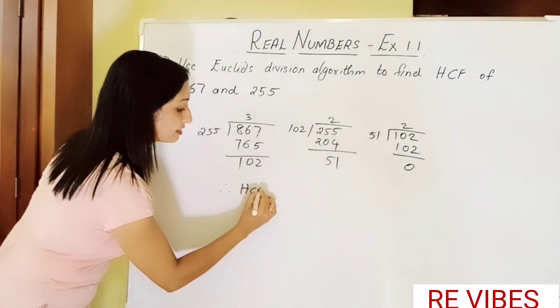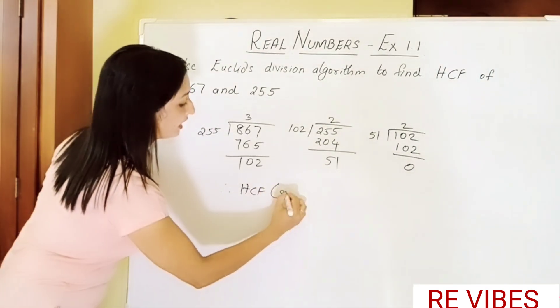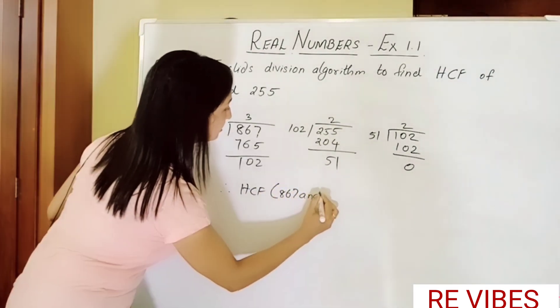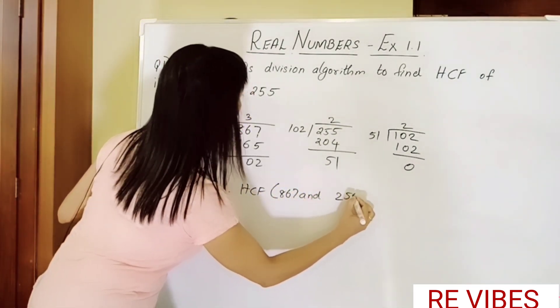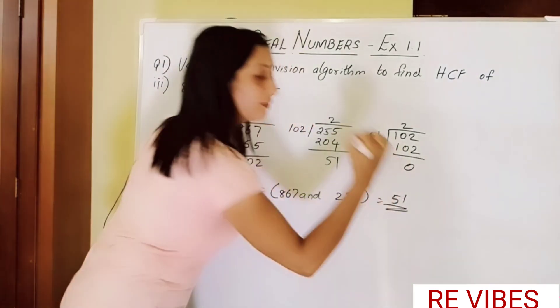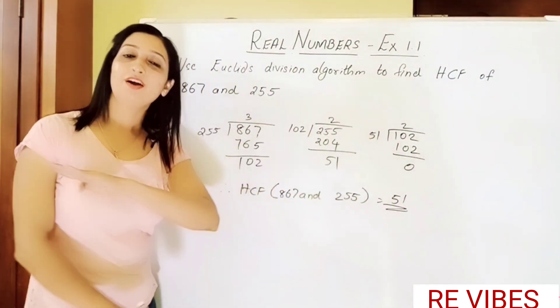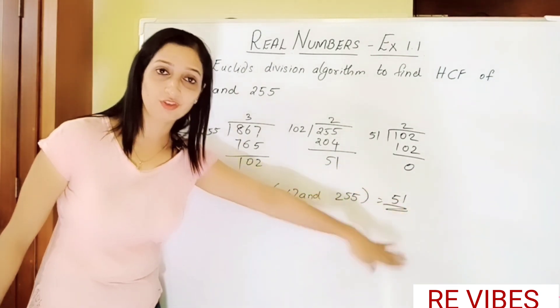Therefore, HCF of 867 and 255 is 51. So that was the answer of our subdivision 3.